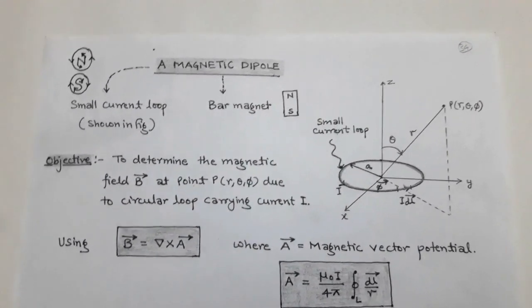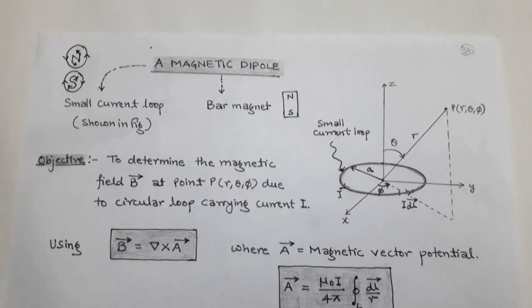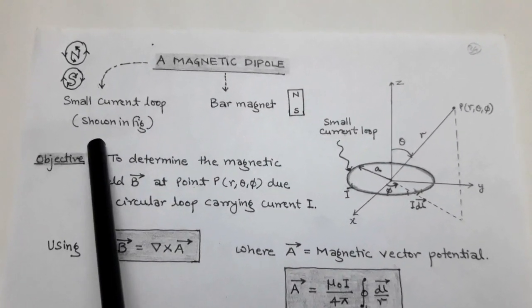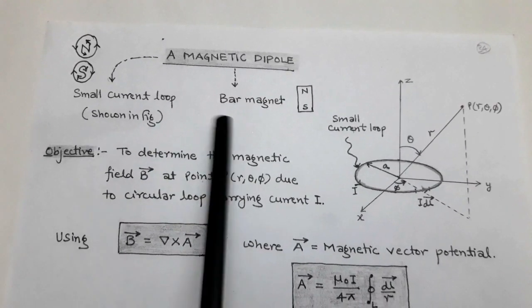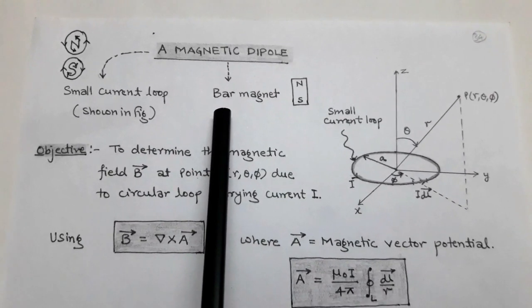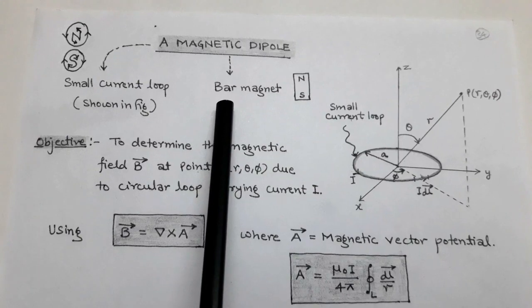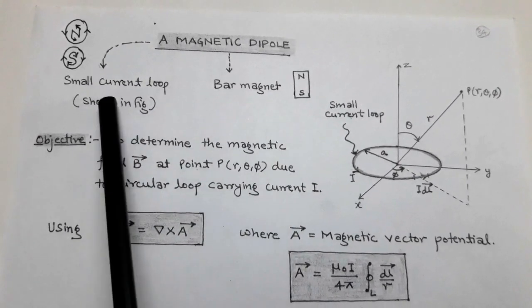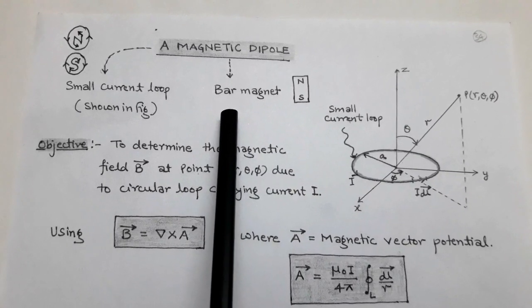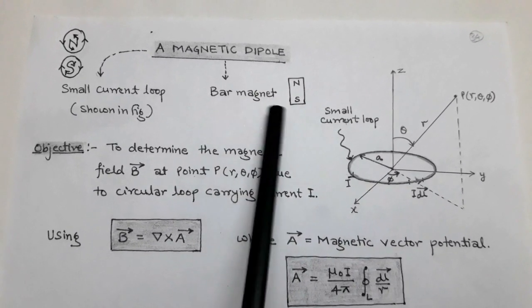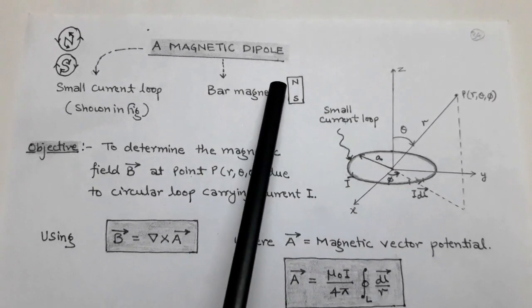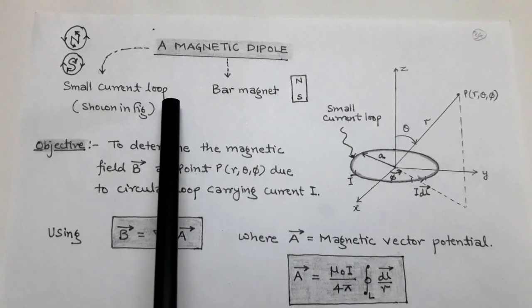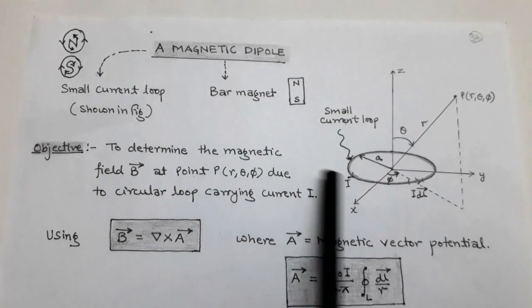The topic is magnetic dipole in magnetostatics. There are two magnetic dipoles: the first is a small current loop and the second is a bar magnet. The bar magnet is a permanent magnet with two poles — north pole and south pole. A small current loop also behaves as a magnetic dipole.